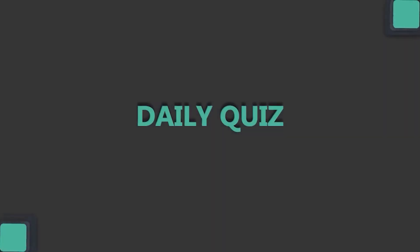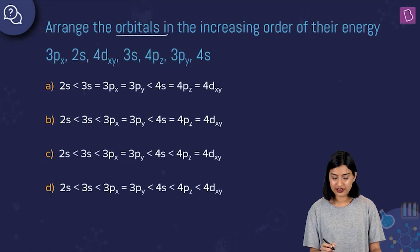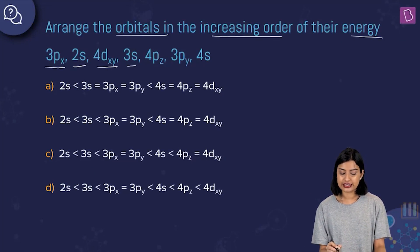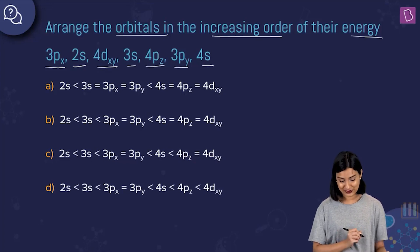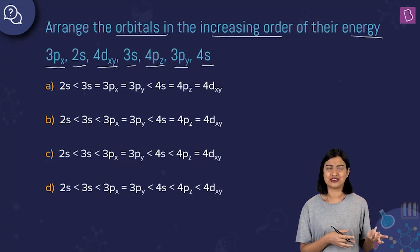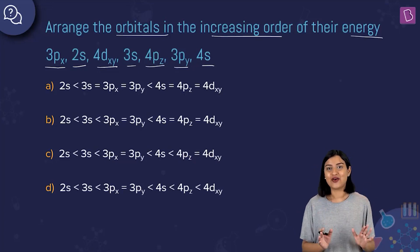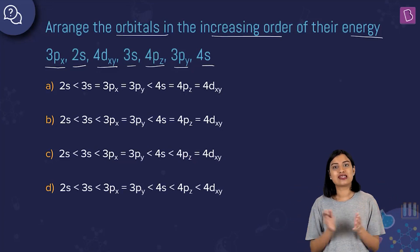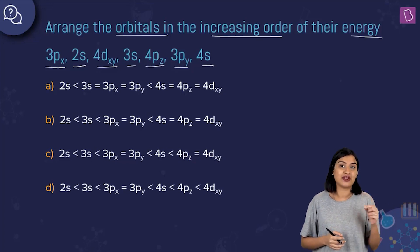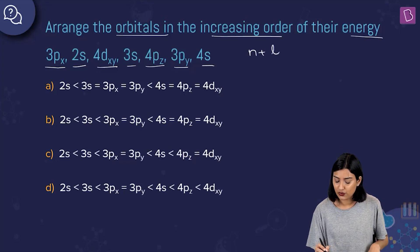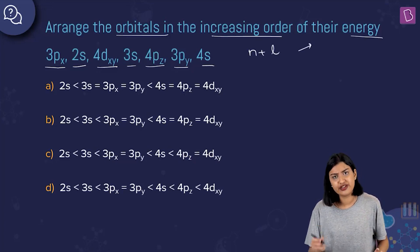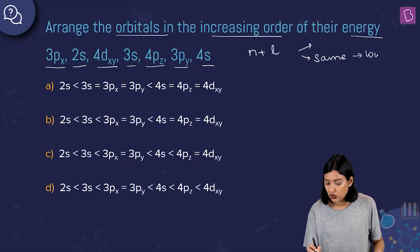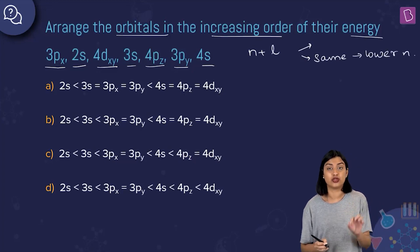The next question asks to arrange the orbitals 3px, 2s, 4dxy, 3s, 4pz, 3pz, and 4s in increasing order of energy. To do this, we calculate the n+l value for each orbital. If n+l values differ, higher n+l means higher energy. If they are the same, the orbital with the lower principal quantum number n has lower energy.